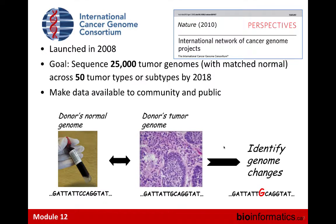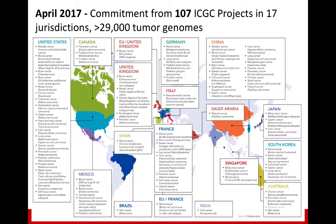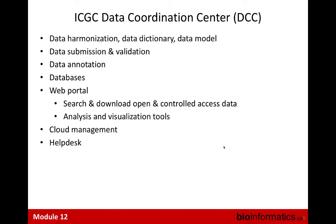ICGC started almost 10 years ago with the goal to collect 25,000 tumors with matched normals. This project is currently wrapping up. There are altogether 107 projects from 17 jurisdictions, and they have committed more than 29,000 tumor genomes spread across the world, with the exception of Africa not participating. Having this much data requires a lot of data coordination. Planning was done way ahead — just having sequencing data doesn't help; you need metadata and clinical data.